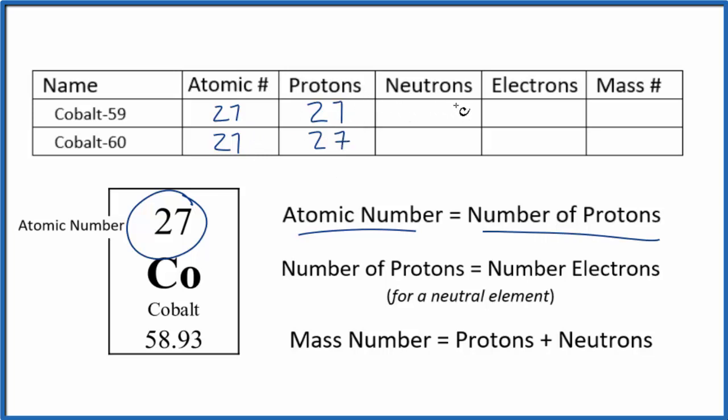Let's skip over the neutrons and look at electrons. On the periodic table, we don't see a negative or positive sign written after the element symbol. So, this is a neutral compound. When we have a neutral compound, the number of protons equals the number of electrons. So, we have 27 electrons for each isotope here of cobalt.